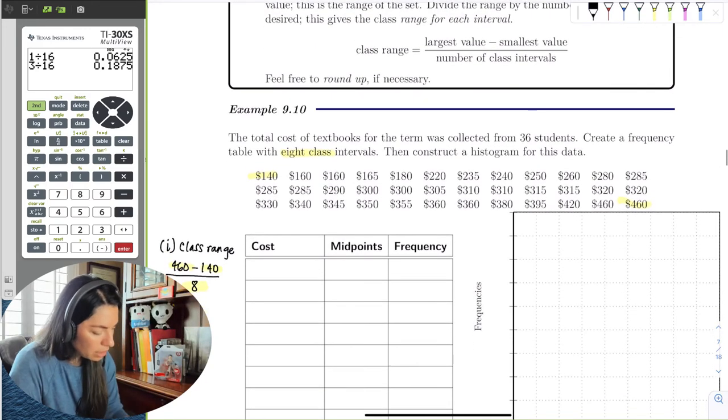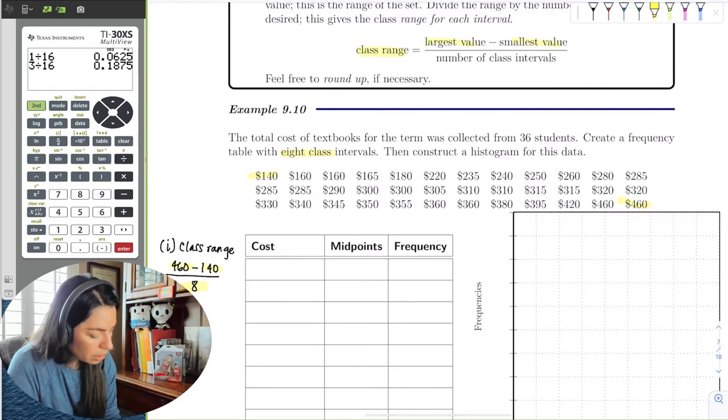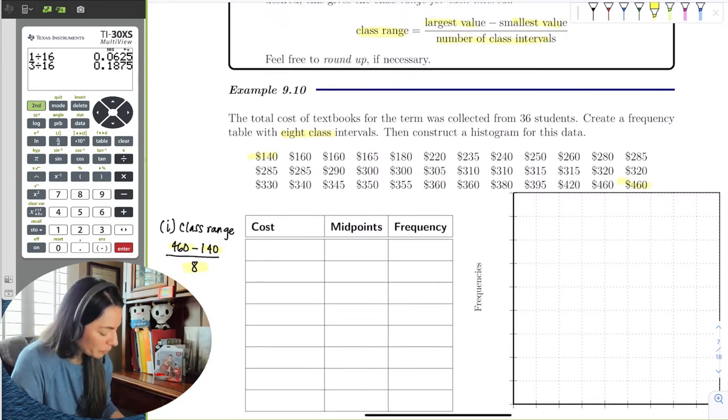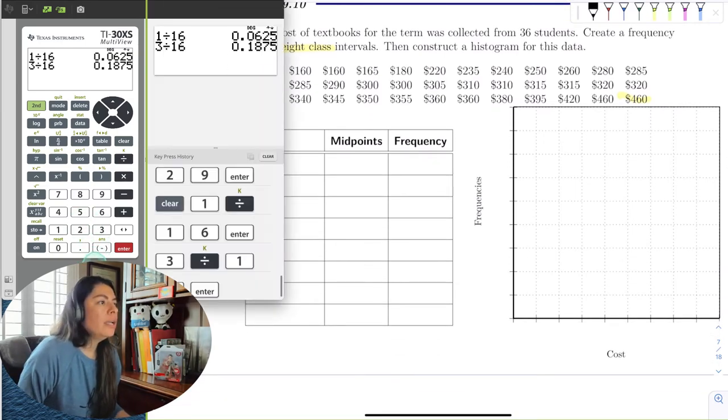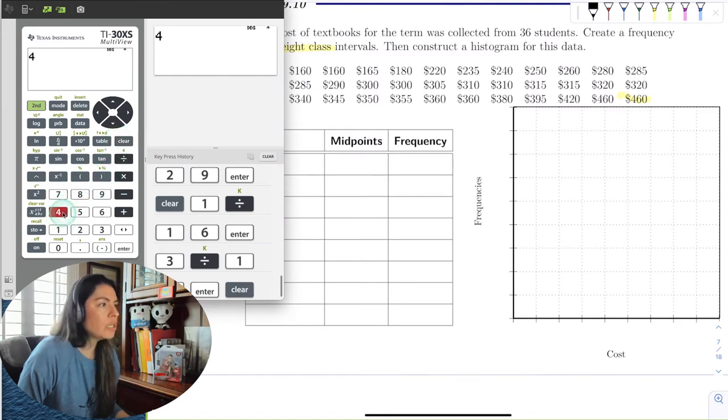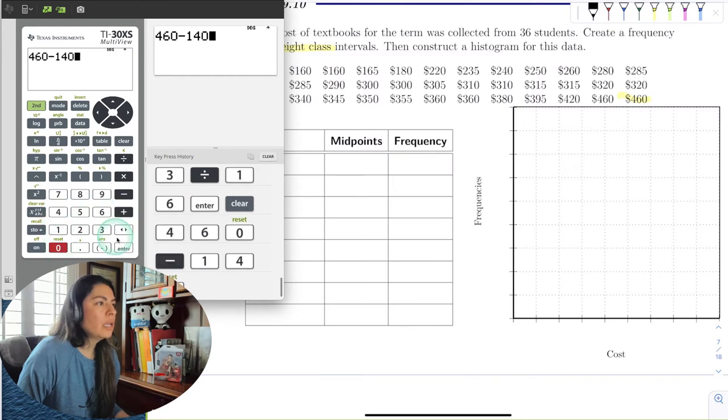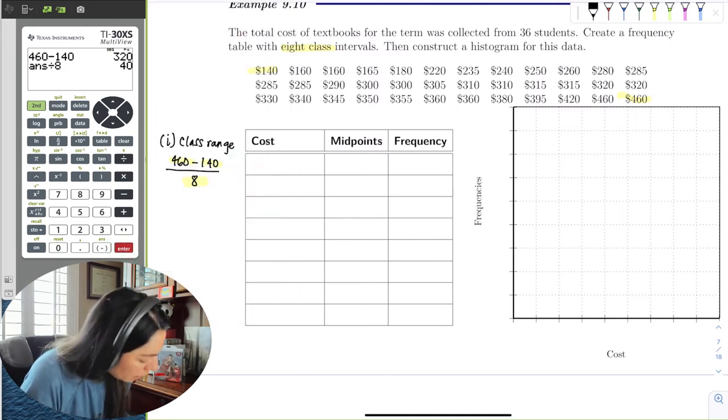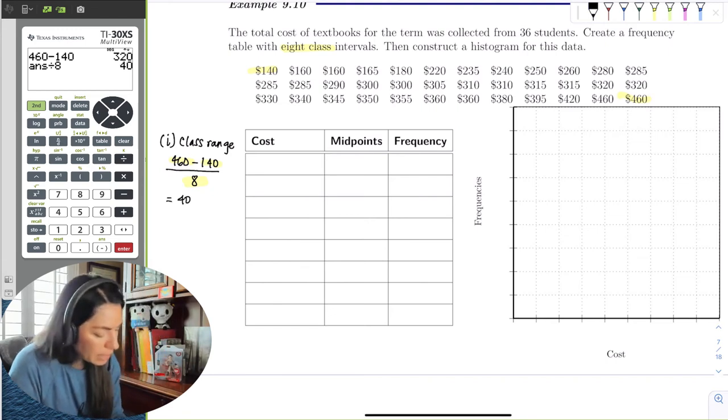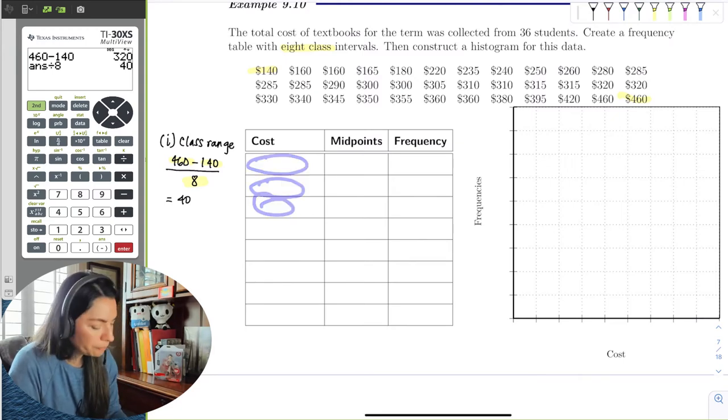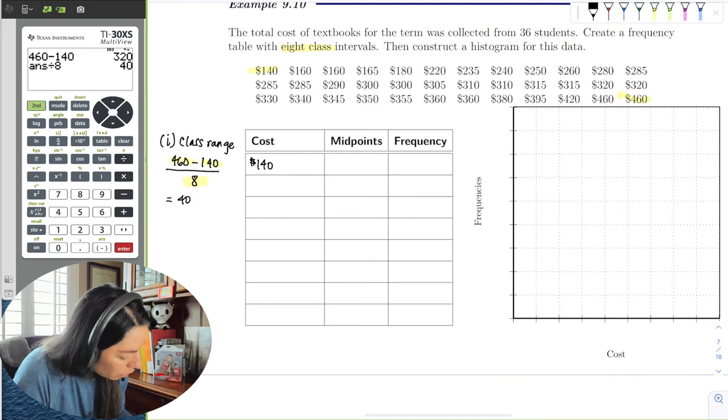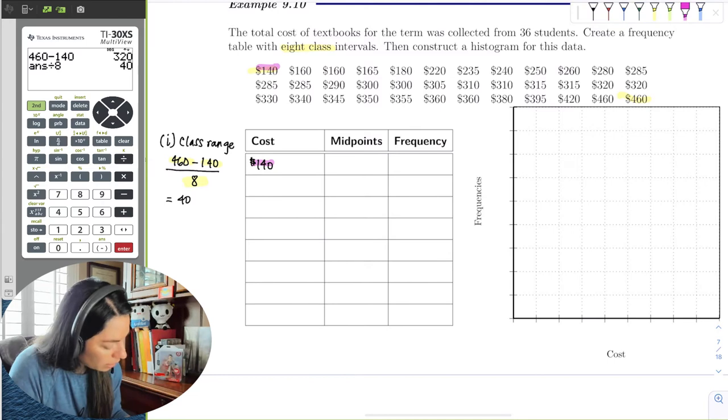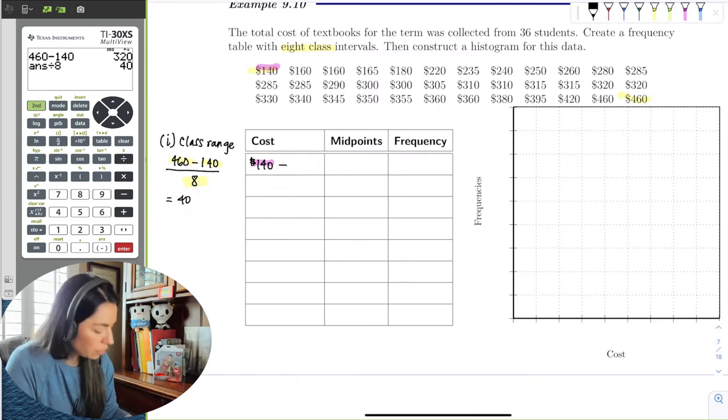So I'm going to go ahead and divide by eight. And once again, the class range is this fraction here. If I did this in the calculator, I can do 460 minus 140 and divide that by eight. I get 40. So 40 will be my class range, meaning that the difference between the low and high is going to be 40. So I would start at the minimum value, 140. And complete the class range. So 140 plus 40 is the upper class limit in the first class, which is 180.